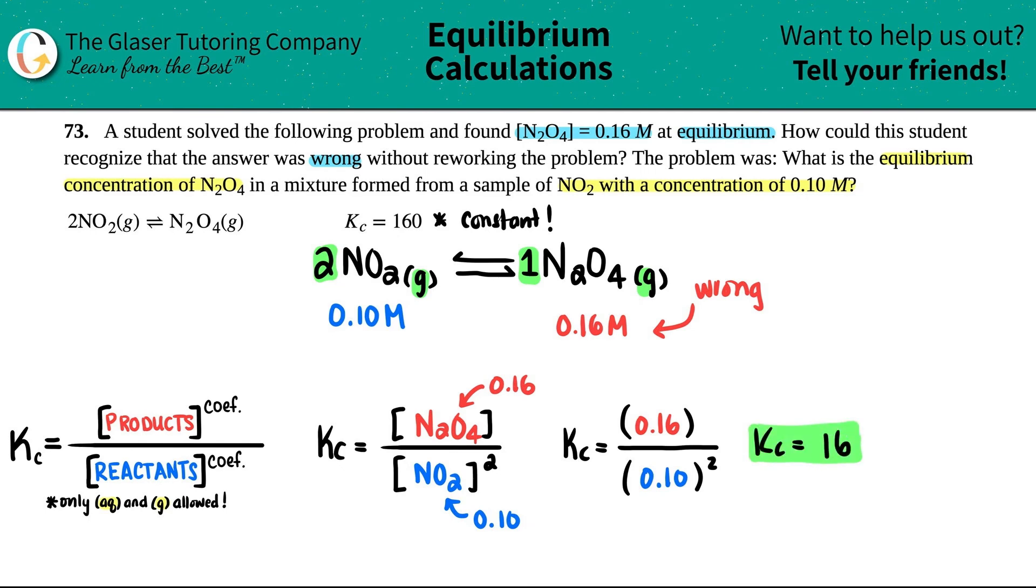And here it is guys, you see how by checking your work this person—the student—got a 16 but they should have gotten a 160. So that's how you know that something went wrong. Just go back, just double check, make sure that everything is good here. So it does not match the known Kc value. That means that you are not at equilibrium, and that's how you would check your work.